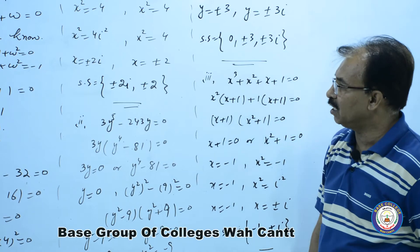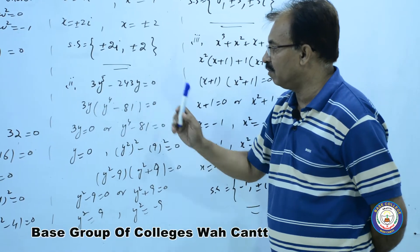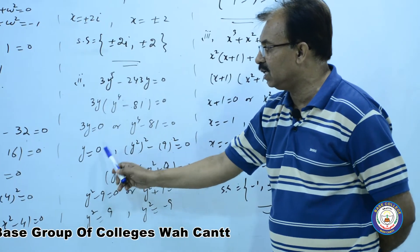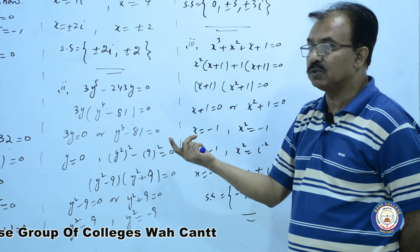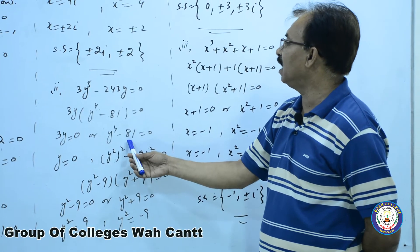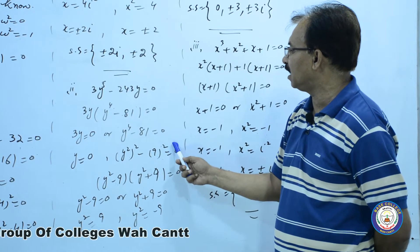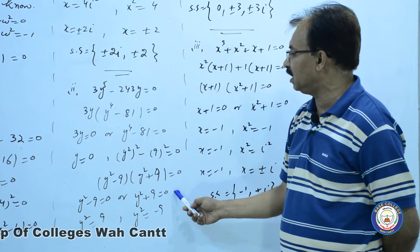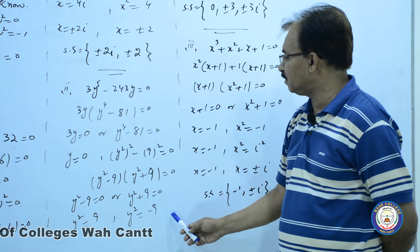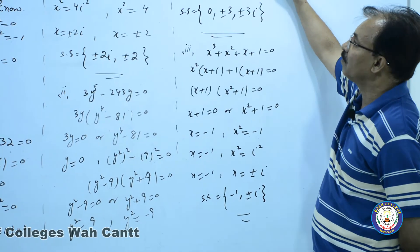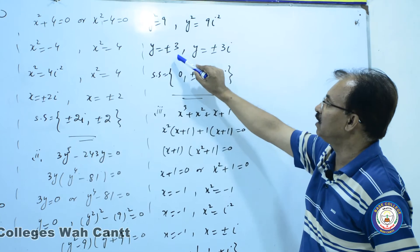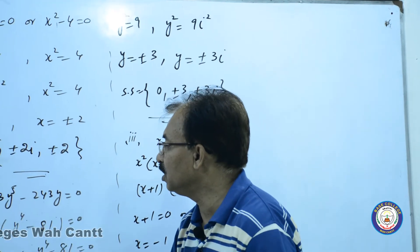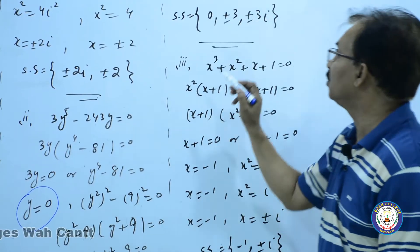اب یہ question ہے۔ سب سے پہلے taking common میں three بھی common آیا اور five بھی common آیا، تو remaining part یہ ہے۔ اب three y کو zero کے equal consider کیا تو three پر divide کیا، y is equal to zero آیا۔ یہ بھی ایک solution set کہلائے گا کیونکہ یہ variable ہے۔ یہاں سے y square کا square اور eighty one کو nine کا square لکھا، a plus b اور a minus b factorize آئے، دونوں کو individual zero کے equal لیا۔ answers آئے: plus minus three اور plus minus three iota۔ یہ ہمارا solution set ہے اور y equal zero بھی solution set میں شامل ہے۔